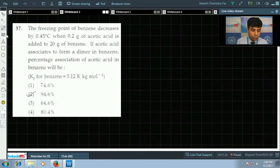Question number 37 belongs to solutions chapter. It says the freezing point of benzene decreases by 0.45 degree celsius when 0.2 gram of acetic acid is added to 20 gram of benzene. If acetic acid associates to form a dimer in benzene, percentage association of acetic acid in benzene will be. Kf for benzene is given and four options are given.